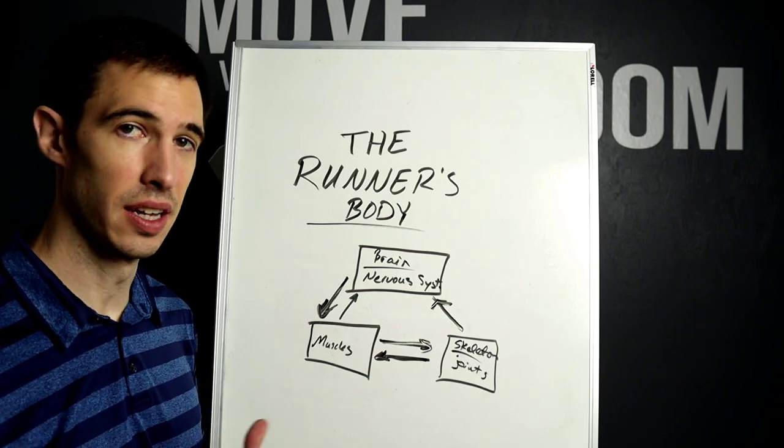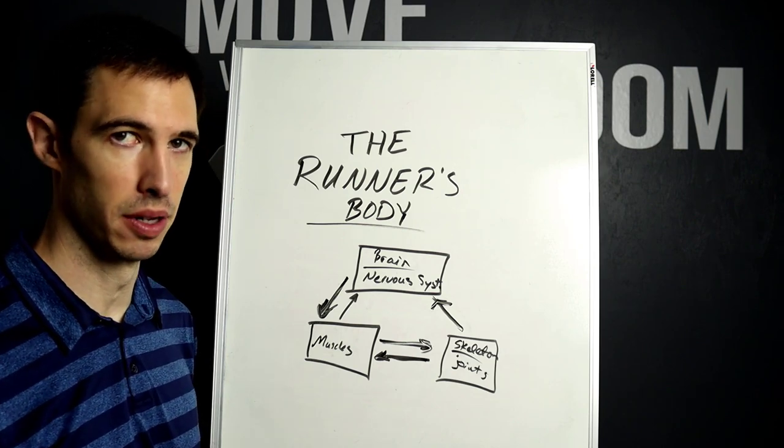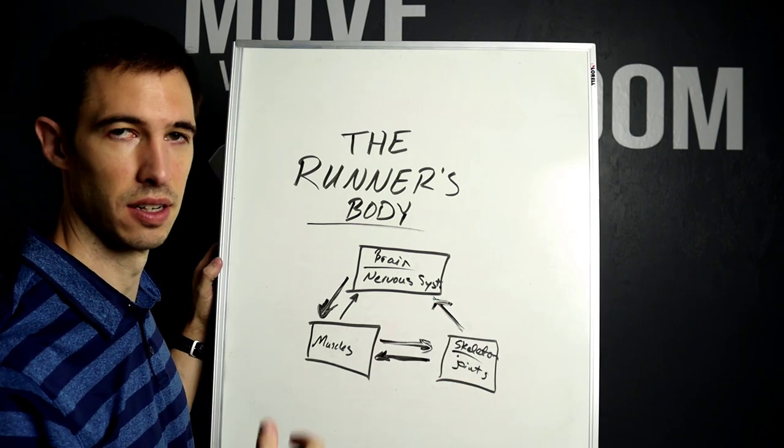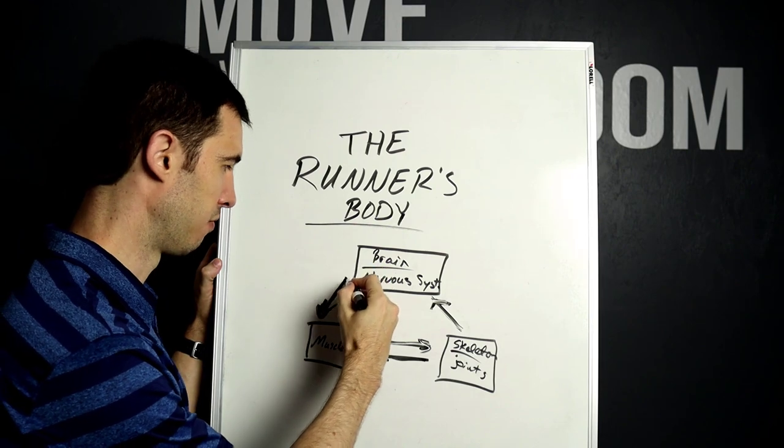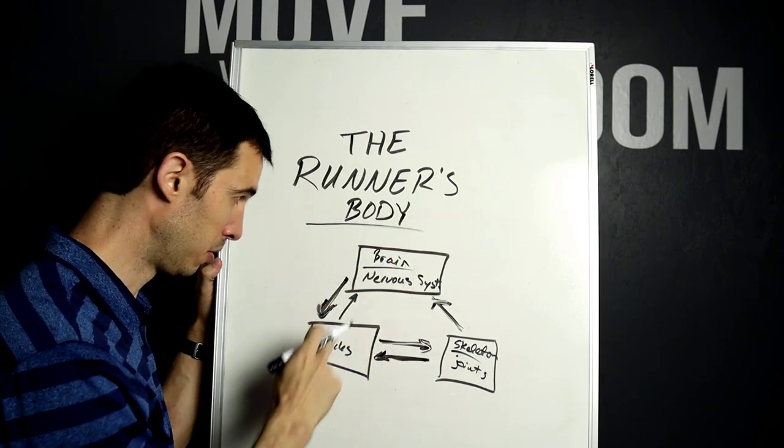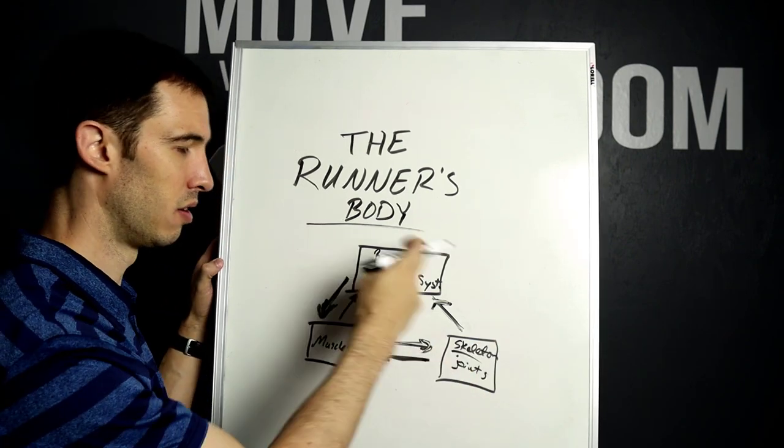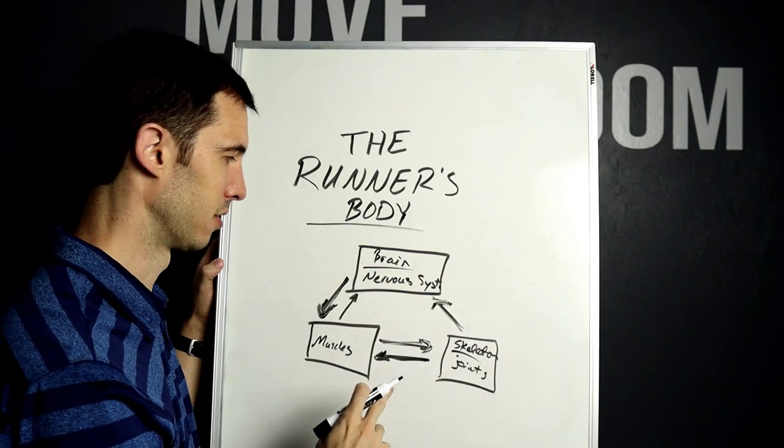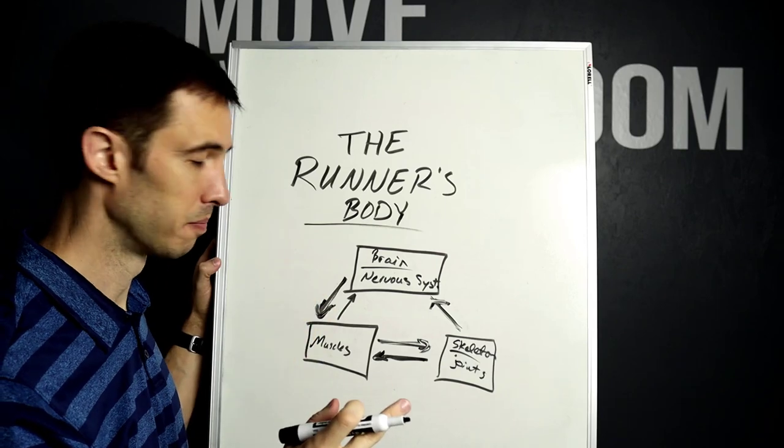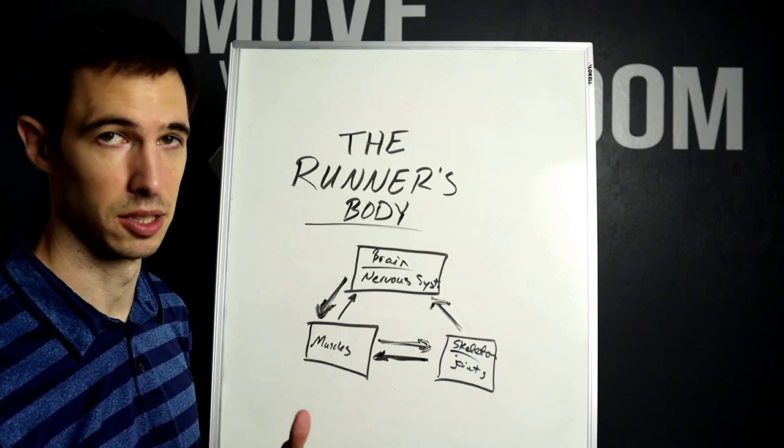If you're getting good input from each part of the system, you're going to get better output all over. If you get better input from the skeleton and joints, you're going to get better output from the brain to the muscles. And if you get better input to the muscles, you're going to get better output from the muscles. It all works well together. All of these things need to be working and communicating well with each other in order to get the body working as efficiently as possible.